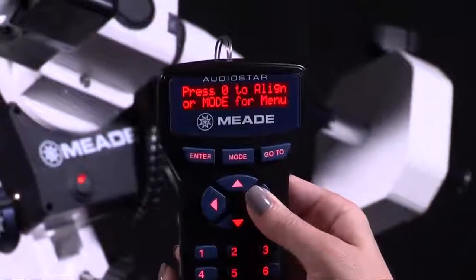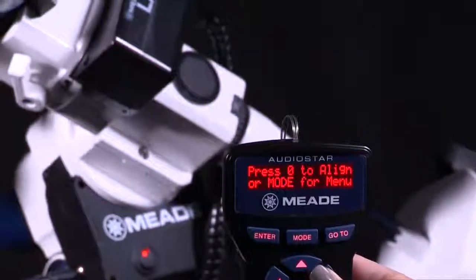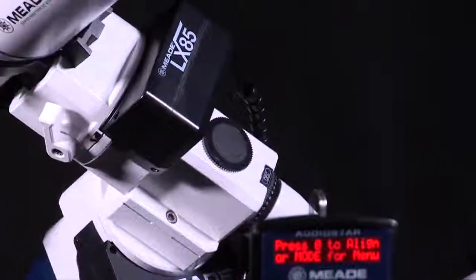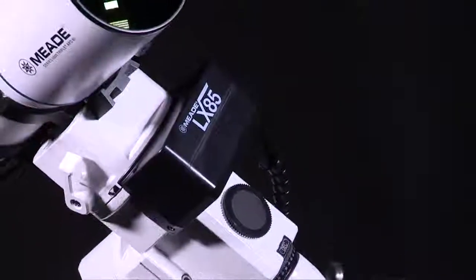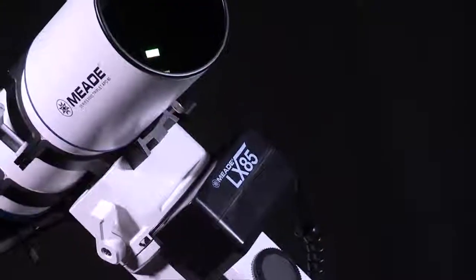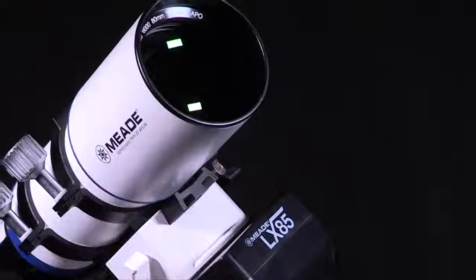With the included AudioStar hand controller, you have easy access to over 30,000 objects that you can view with the simple press of a button. AudioStar's astronomer insight technology features a built-in speaker that plays over 4 hours of educational content about the celestial objects you view.